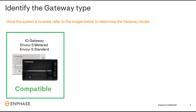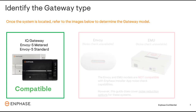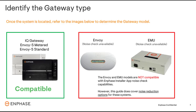First, locate and identify the gateway in use at the site. Most often, the gateway will be installed near the breaker panel or a sub-panel. The IQ Gateway, Envoy S-Metered, and Envoy S-Standard software can run the noise detection tool. The Envoy model shaped like a pill and EMU are not compatible with the noise detection tool.